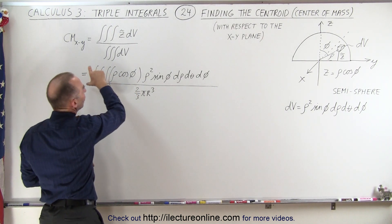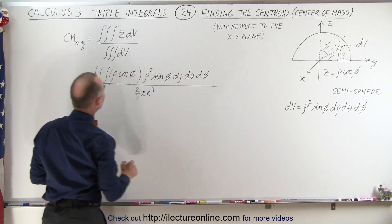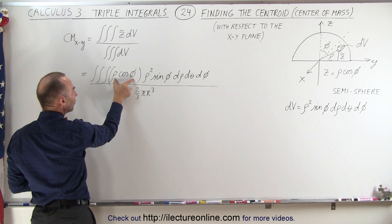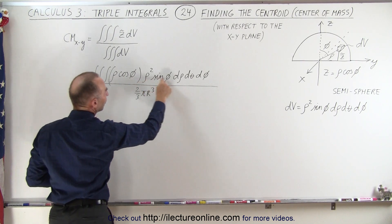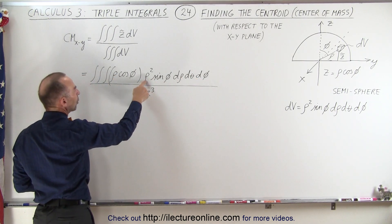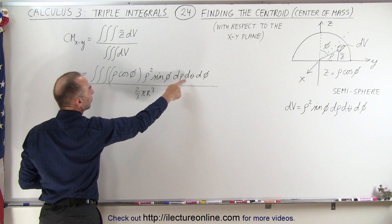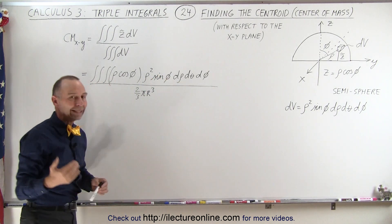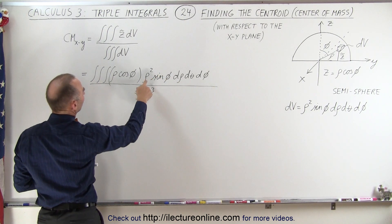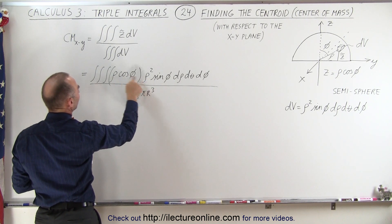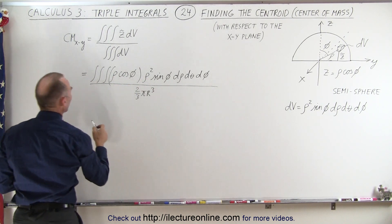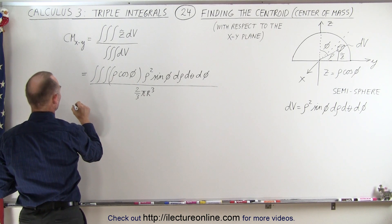We still have to integrate the numerator. We have the distance to our volume element times the volume element, and we integrate that over rho, over theta, and over phi in that order. First we integrate over rho: we have rho cubed, and when we integrate that, we get rho to the fourth power over four.